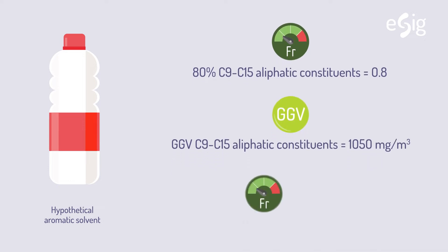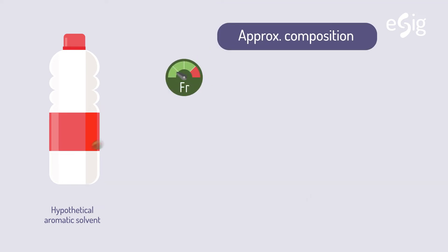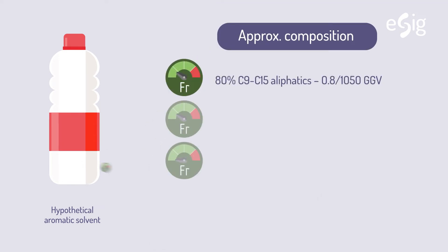Thirdly, the fraction is divided by the GGV. This is done for all other constituents' fractions, to finally add them all up and do the reciprocal of the sum to obtain the solvent's calculated OEL.